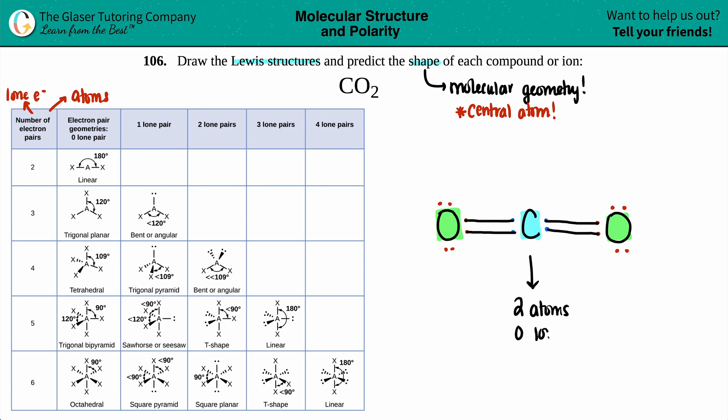In order to find out your geometry, all you have to do is just add these two numbers up. So two plus zero is two, and then you find your category. In this case we have the two and there's only one molecular geometry for a two, which is linear.